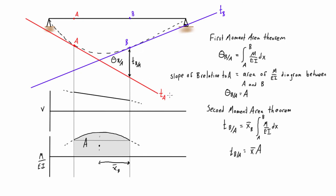In the second moment area theorem, we work with the centroids a little bit and we're able to find the tangential deviation, which is the vertical separation between the two tangent lines at the point of interest that we're trying to find information about.